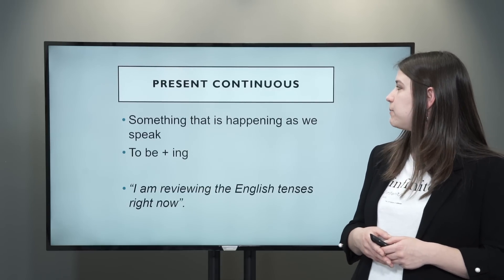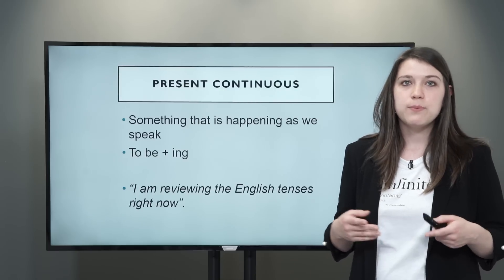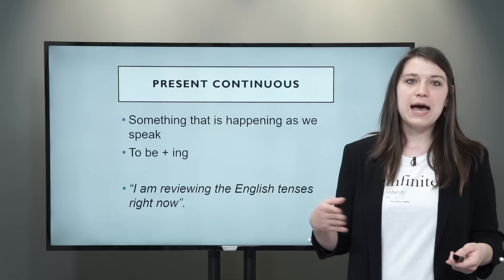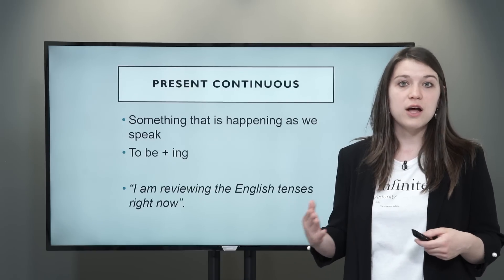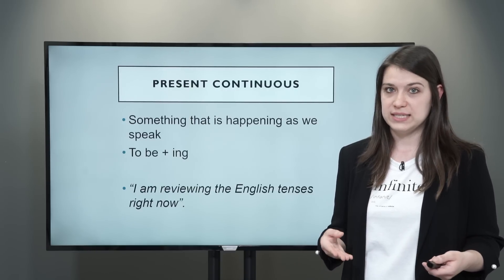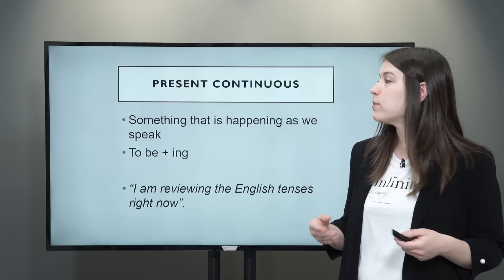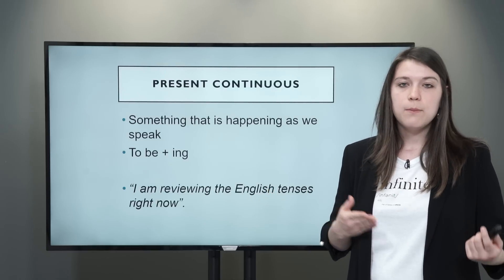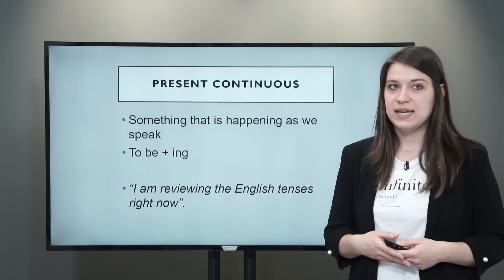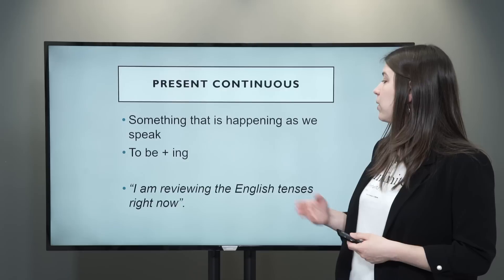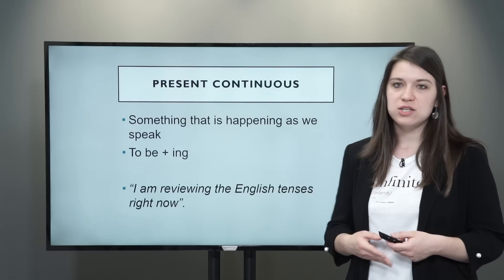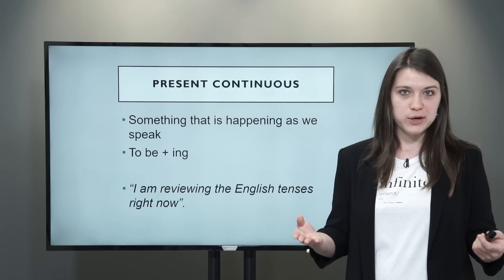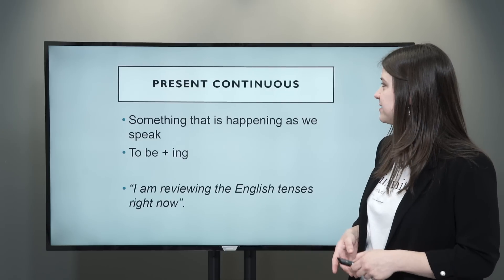Now let's talk about the present continuous. We use the present continuous to talk about something that is happening as we speak — so it's an ongoing action in the present. We form the present continuous with the verb to be in the present plus -ing. For example: I am reviewing the English tenses right now — and so are you if you're watching this class.